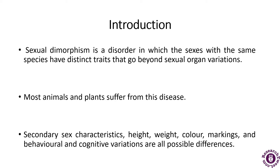Most plants and animals exhibit this because there are secondary sex characteristics — that is height, weight, color, markings, and behavioral and cognitive variations — which make all the difference. Sexual dimorphism tells us that these distinctions can be subtle or extreme and they can be influenced by sexual or natural selection.